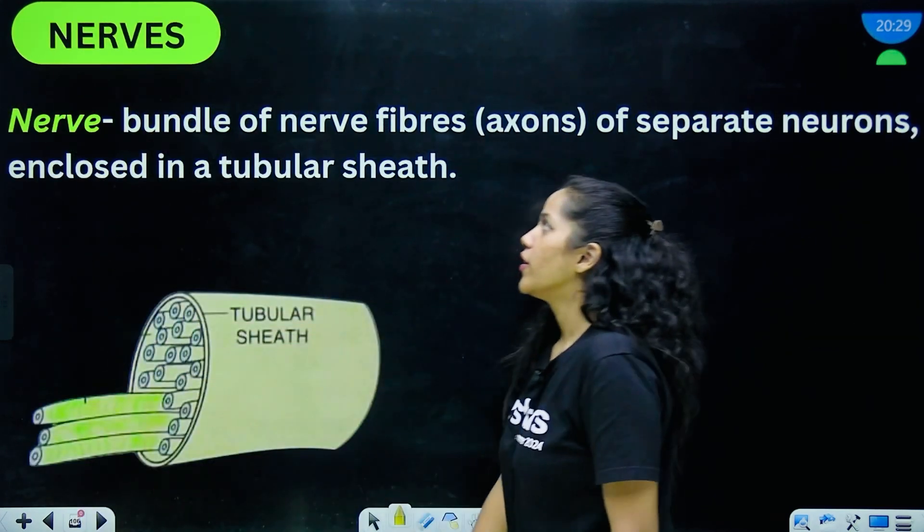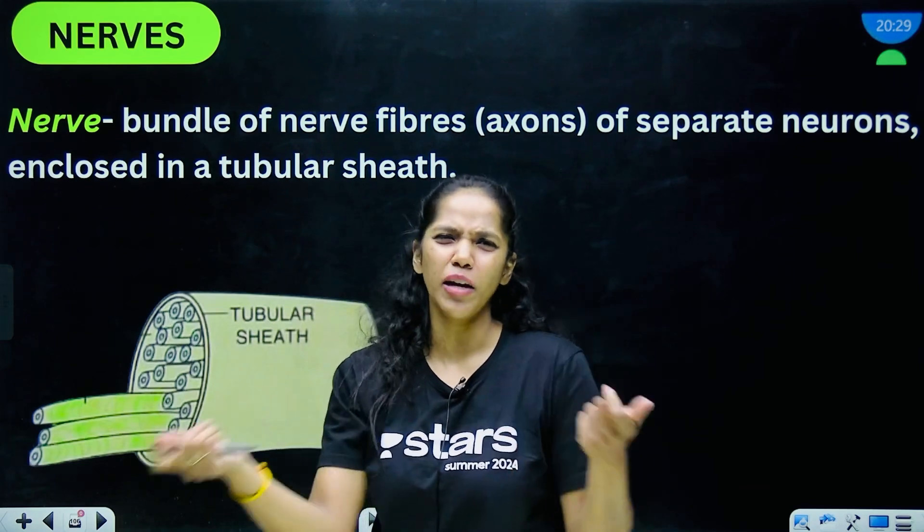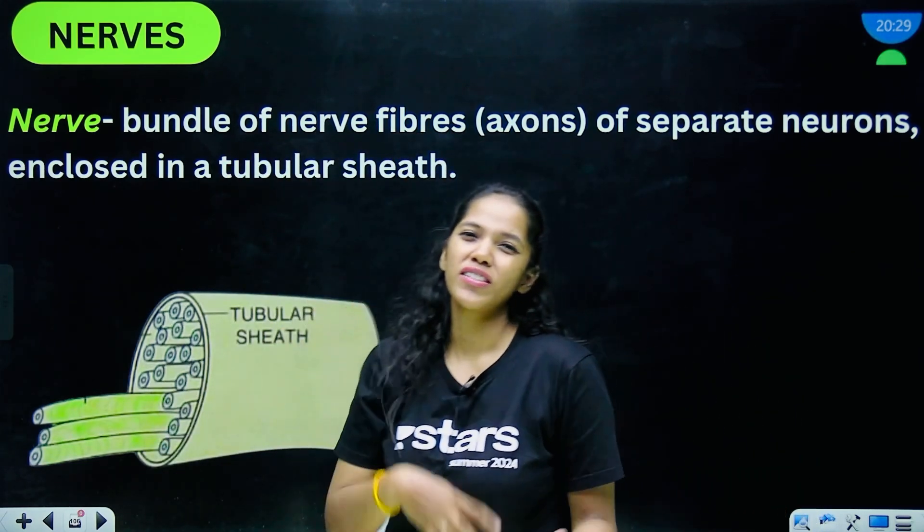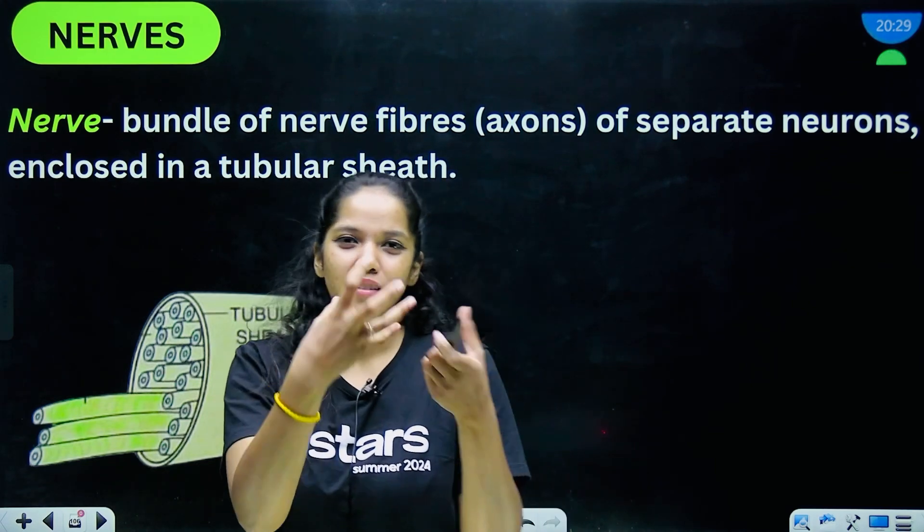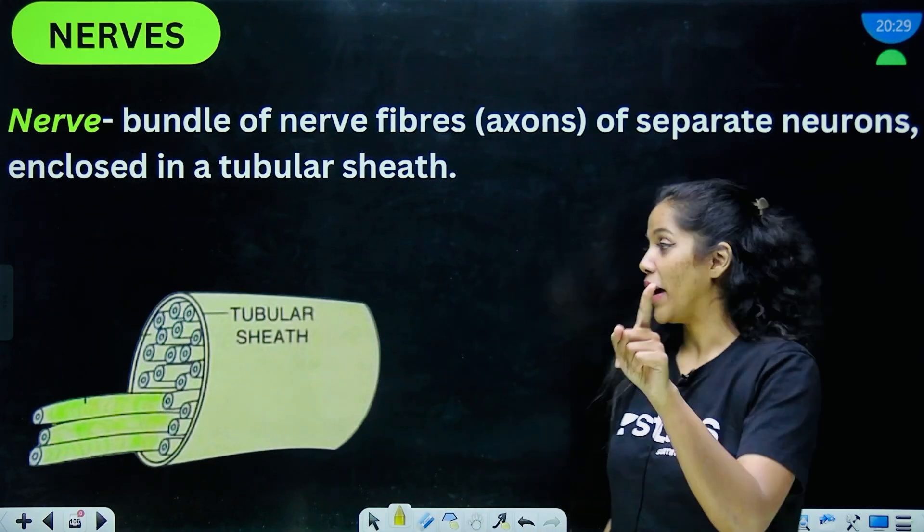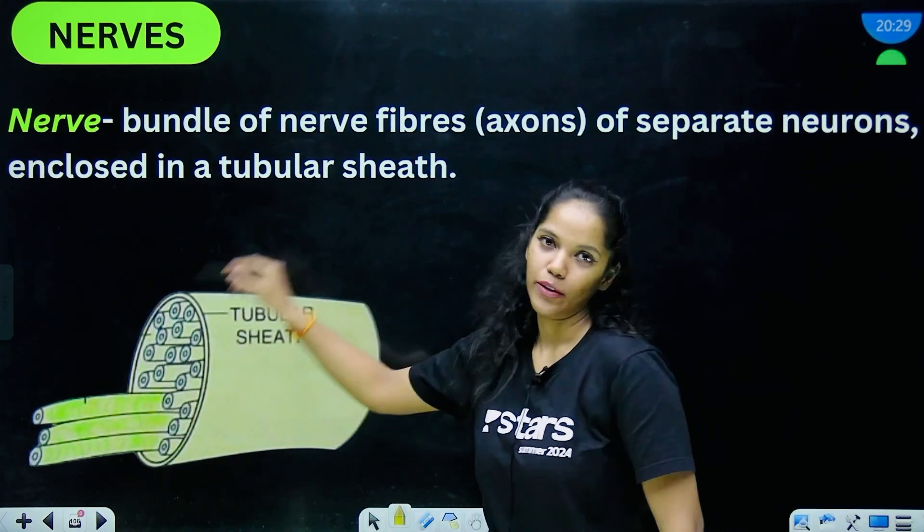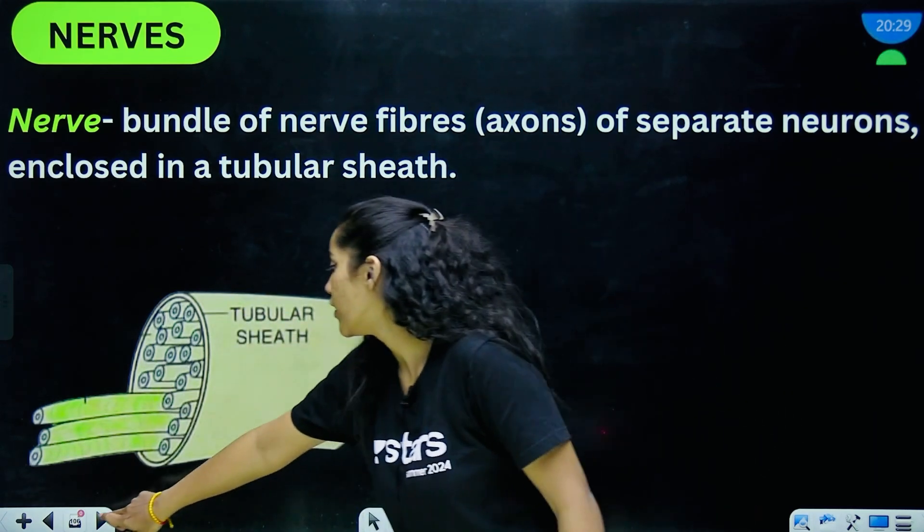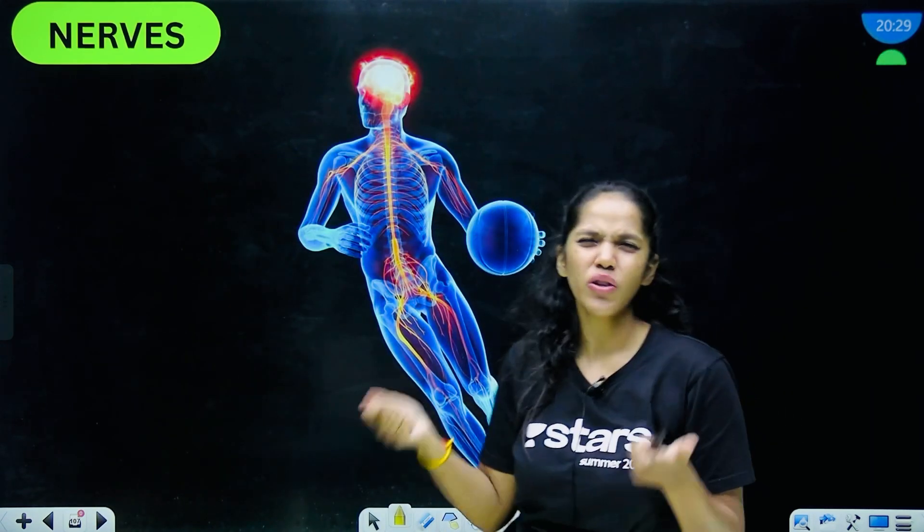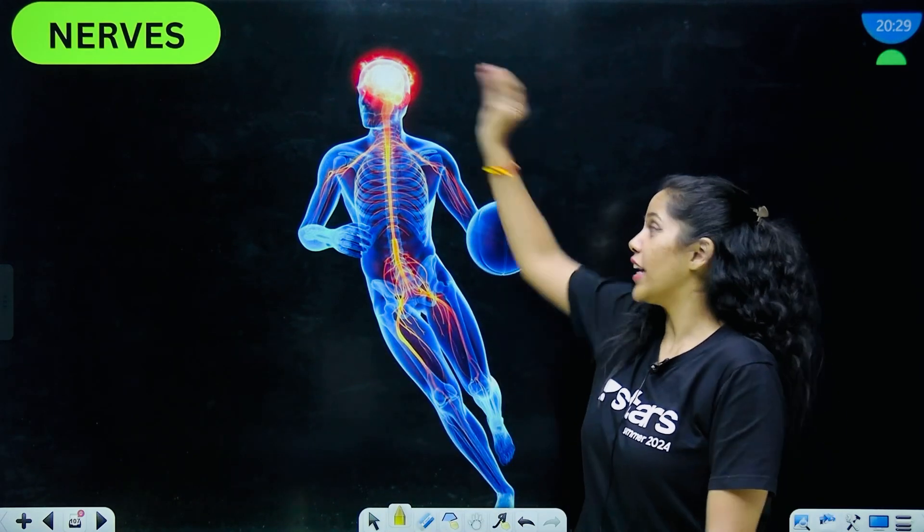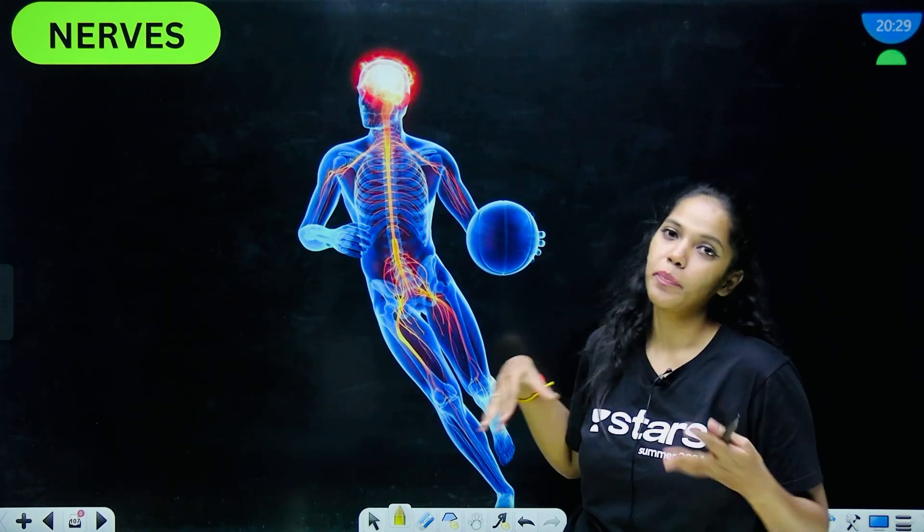Moving on—nerves. What are nerves? You can always relate these to like a cable wire, right. So nerves are nothing but a bundle of nerve fibers that are encapsulated or enclosed within a tubular sheet. Mind you, it is not the myelin sheath. So nerves are basically these very thin white thread-like structures that emerge from your brain and spinal cord and are spread, branched out throughout your body.